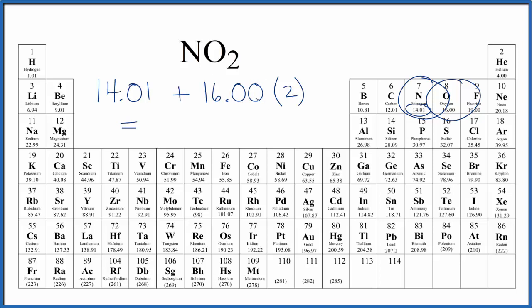So we multiply two by 16.00, we add that to 14.01, we get 46.01, and the units are grams per mole.